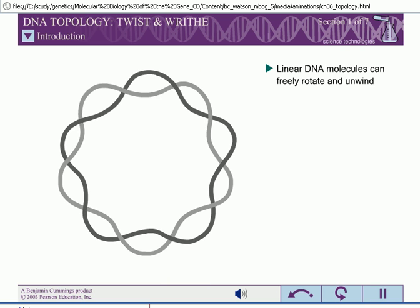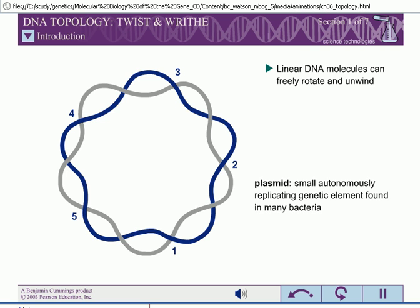However, DNA molecules can also be circular. Examples of circular DNA molecules include most bacterial chromosomes, some viral chromosomes, and small bacterial genetic elements called plasmids. For such covalently closed circular DNA,